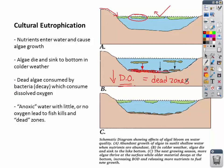Just to recap: nutrients enter the water and cause an algae bloom. That algae dies and sinks to the bottom of the lake, where bacteria start consuming that dead algae, taking out the dissolved oxygen in the water. The bacteria consumes the dissolved oxygen, leading to what's called an anoxic situation. Animals need oxygen to breathe, therefore you have dead zones. Cultural eutrophication is a big problem in our nation's and our world's waterways.